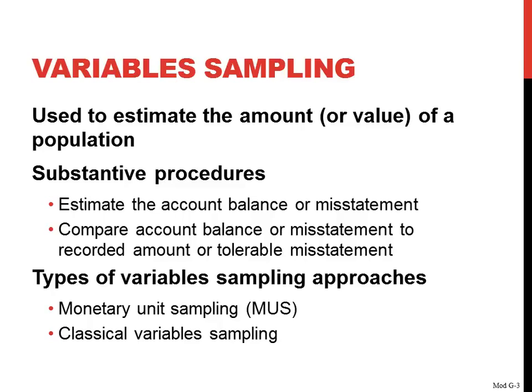Remember, your tolerable misstatement is based on your planning materiality. So back in the planning stage, when you set your materiality amounts, you allocated your overall planning materiality to various accounts, such as accounts receivable, such as accounts payable. And that was your tolerable misstatement for that account. So when you're estimating that account balance or misstatement, after you've performed your procedures and you evaluate your results, you're going to compare that to your tolerable misstatement to determine whether or not you can rely on the amount or draw the conclusion that the account is not materially misstated.